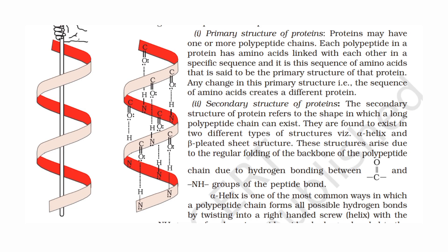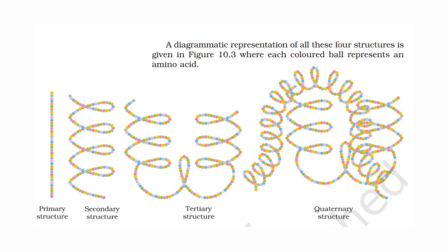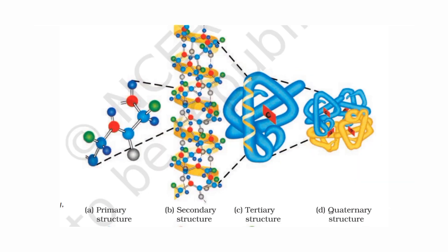Proteins have four levels of structure: primary, secondary, tertiary, and quaternary. The primary structure refers to the sequence of amino acids. The secondary, tertiary, and quaternary structures describe progressively more complex 3D arrangements of the polypeptide chains.